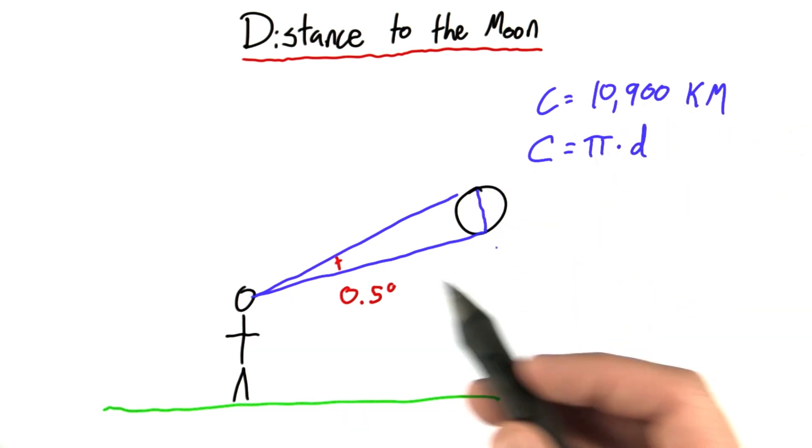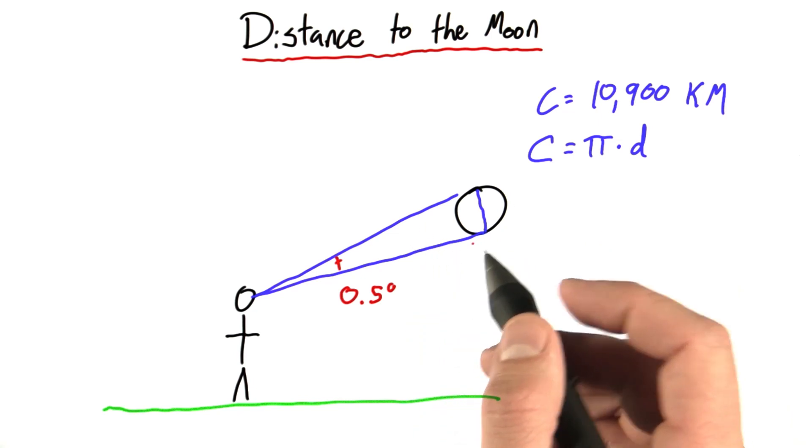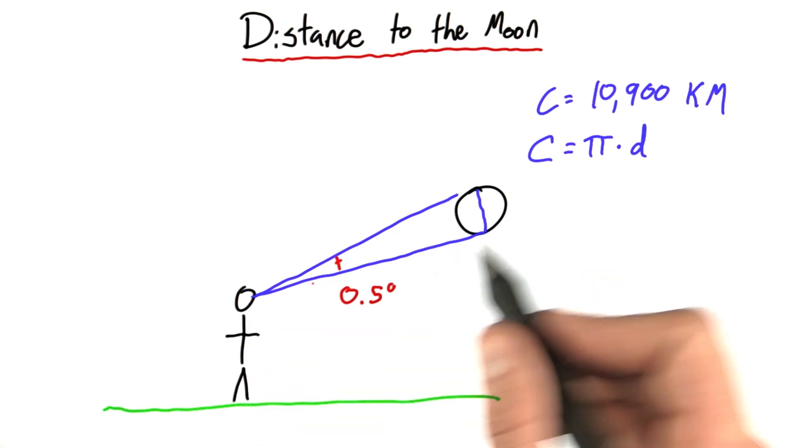Using this knowledge and the half a degree angular size of the moon, you should actually be able to calculate this distance, the distance to the moon.